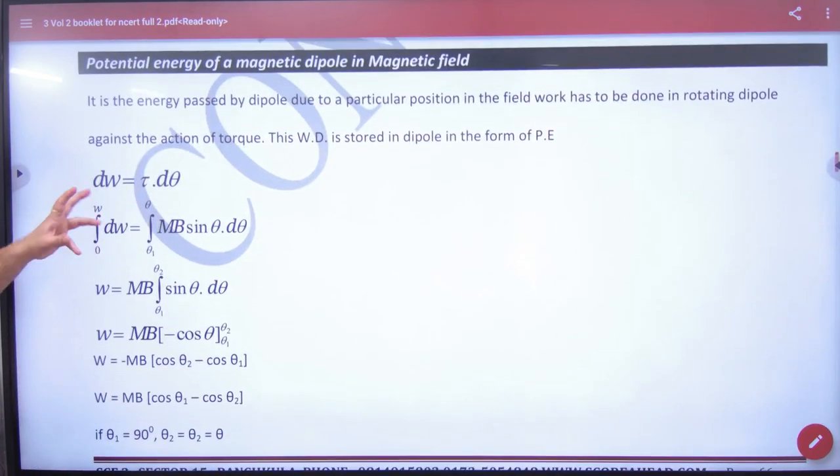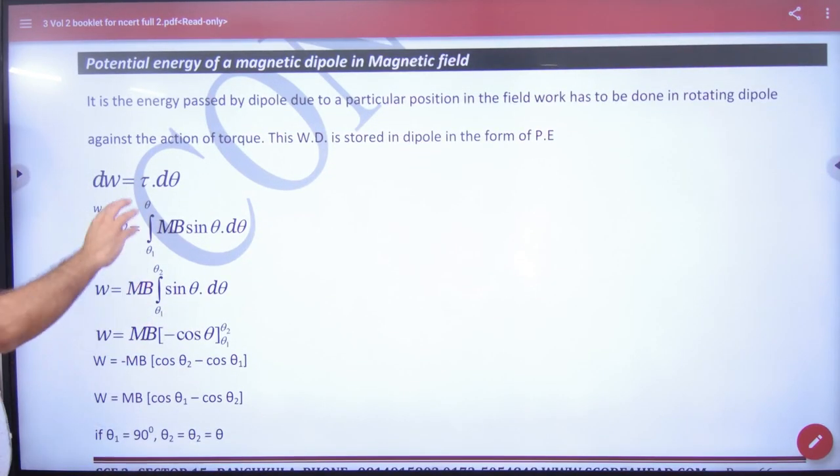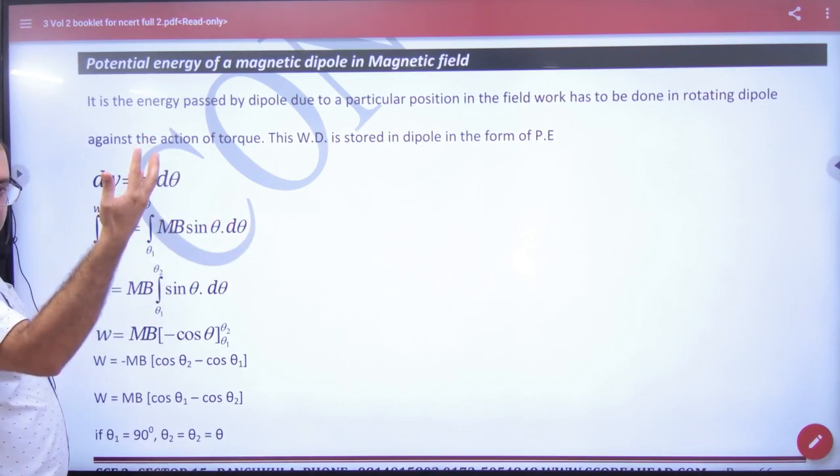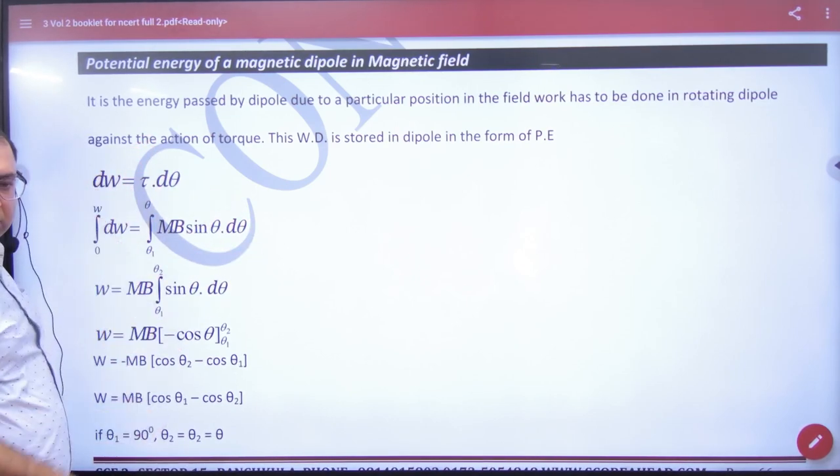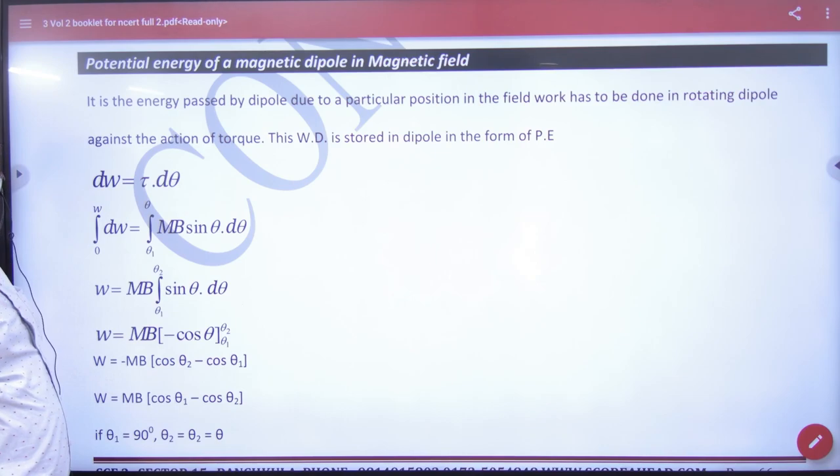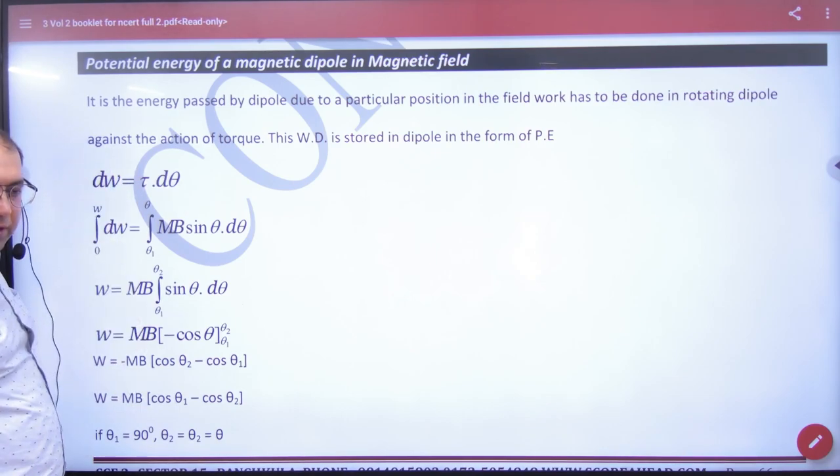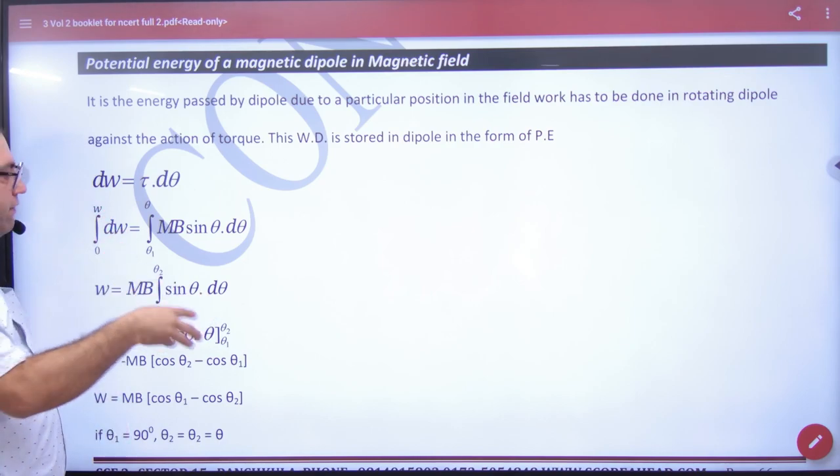So, in the expression for potential energy, you have to rotate the magnet and apply the torque. So, small amount of work done will be tau into d theta. Torque expression is mb sin theta. How do you rotate it? Theta1 to theta2.